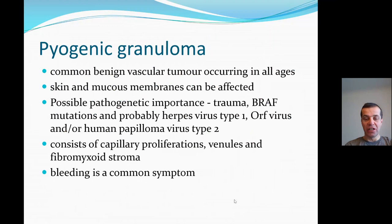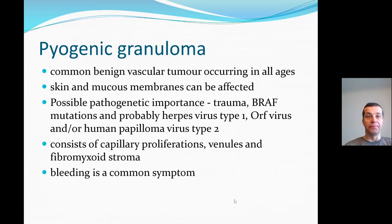The second misnomer is pyogenic granuloma — also not an infection. It is a benign vascular tumor occurring in all ages, consisting of capillary proliferations, venules, and fibromyxoid stroma. Bleeding is a common symptom. It can mimic other vascular lesions and has been shown to be drug-induced from targeted tumor therapies. Surgical treatment involves excision, cauterization, or laser therapy, and some topical treatments may also help. This concludes the lecture about hand infections and a couple of misnomers. Thank you for your attention.